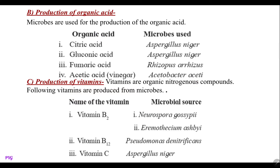These are the organic acids and their microbial sources. Then production of vitamins — vitamins are organic nitrogenous compounds and these vitamins are produced from microbial sources. For example, for the production of vitamin B2, the microbial source is Neurospora gossypii and Eremothecium ashbyi. Then vitamin B12 is produced using the microbial source Pseudomonas denitrificans.